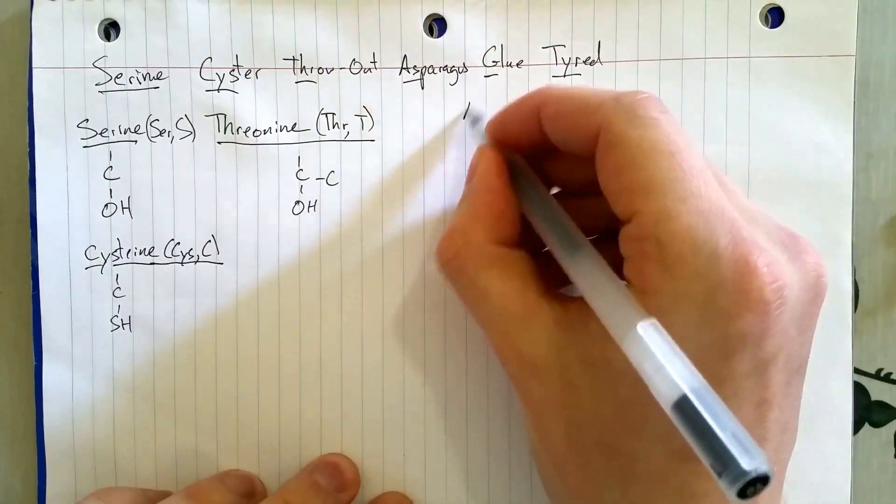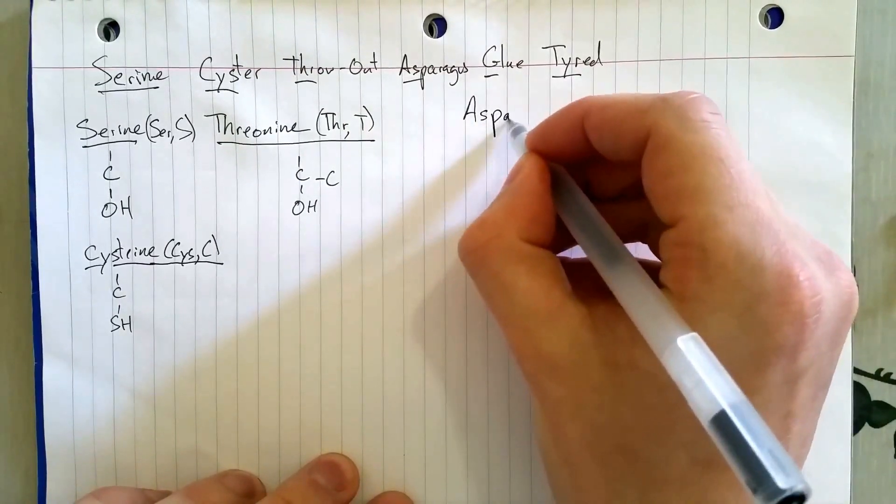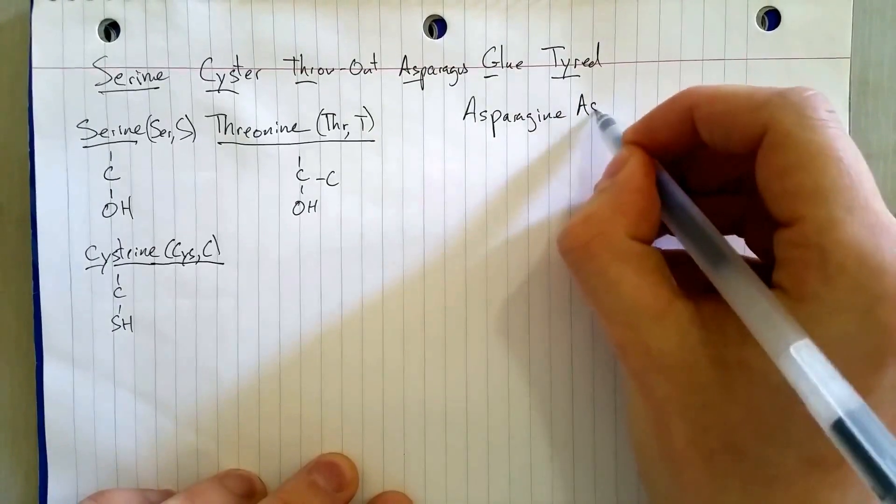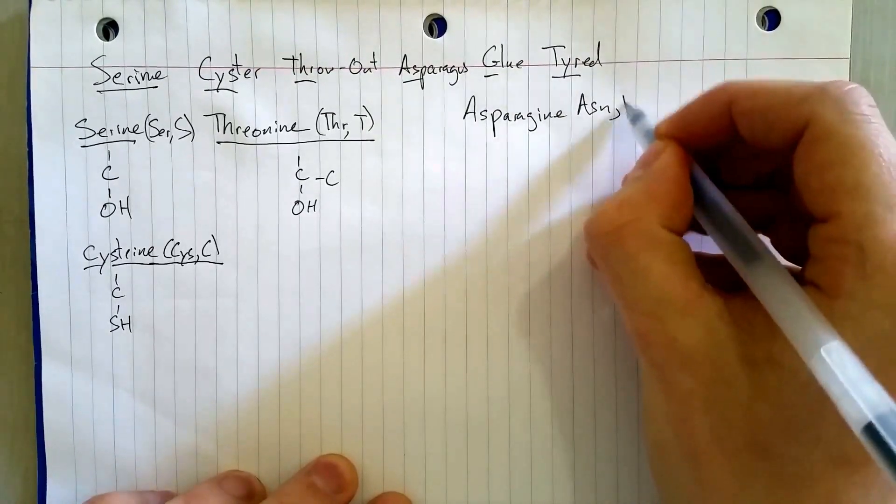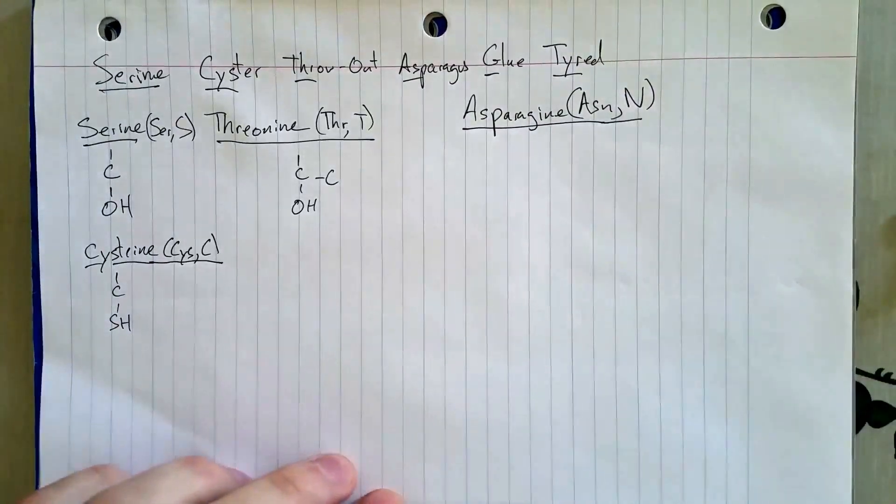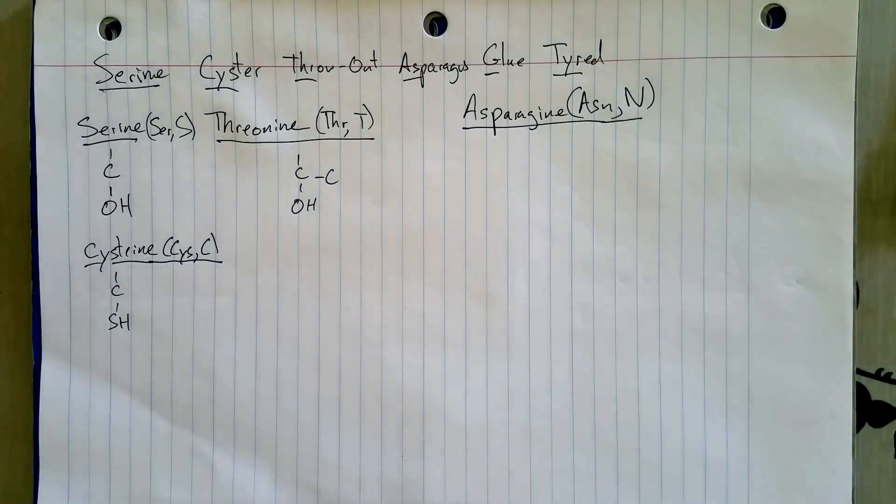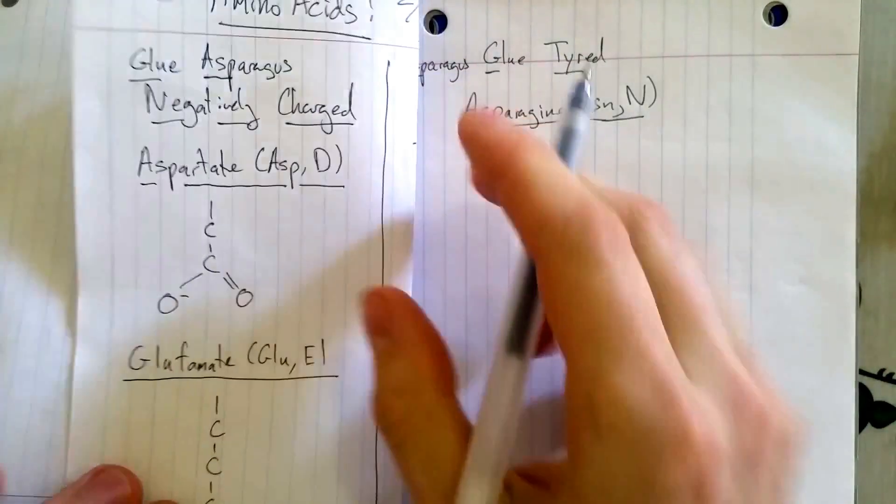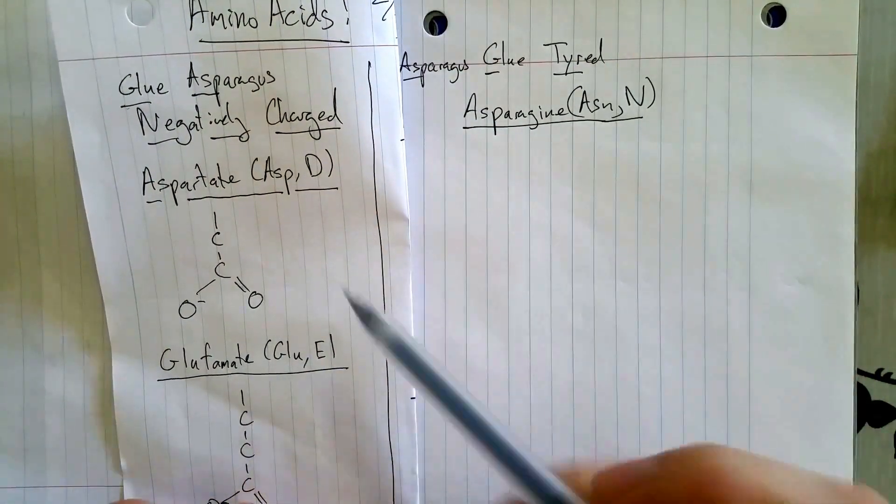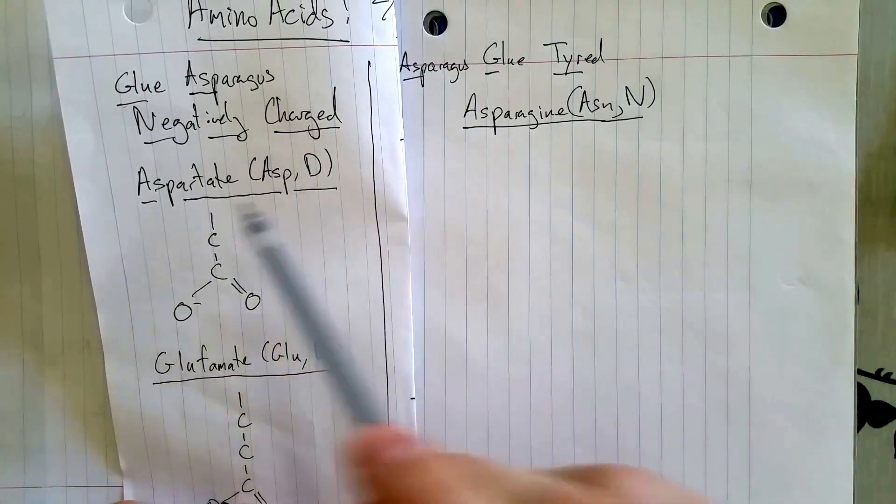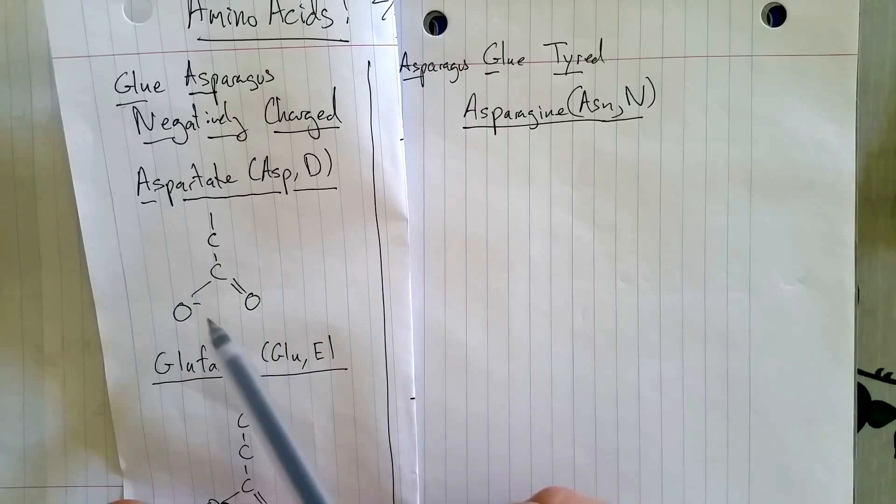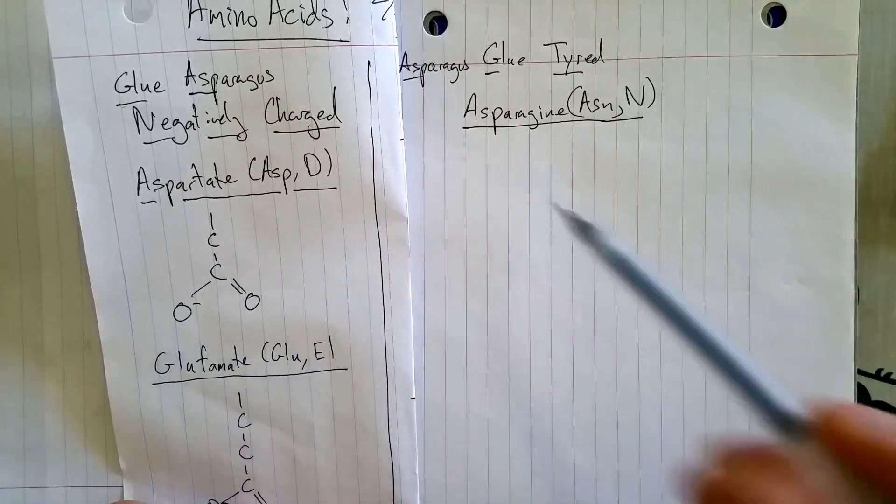Then we have asparagine. So, if you go back to our negative experience getting glue on our asparagus. Asparagine is basically aspartate, except this oxygen becomes a nitrogen.